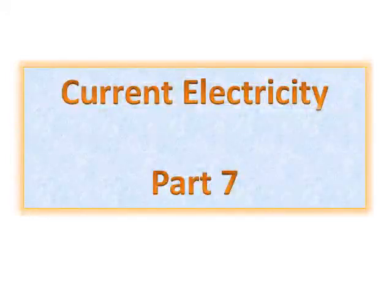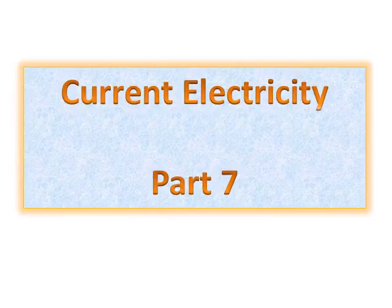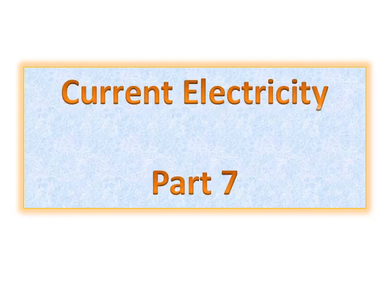Hello! Till now we have studied about Ohm's law. In 1842, German physicist Kirchhoff extended Ohm's law to complicated circuits and gave two laws which enable us to determine current in any part of the circuit. Today, in this video, we will study about Kirchhoff's laws in detail.